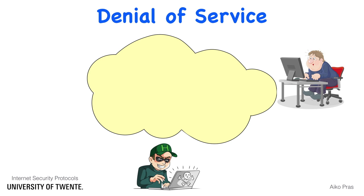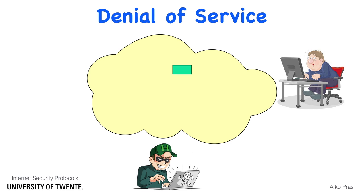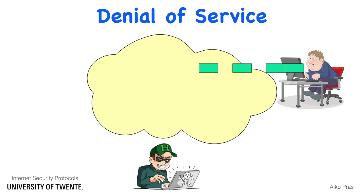Take the example of an attacker who wants to overload Bob's computer. A straightforward approach would be to send all attack traffic directly from the attacker's computer to Bob's computer. However, such an approach would put a heavy load on the attacker's resources.